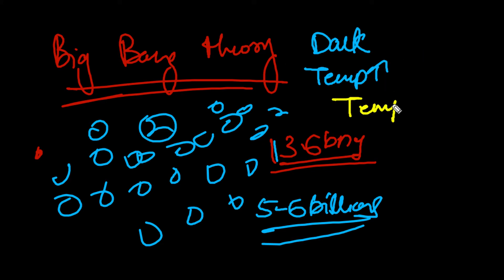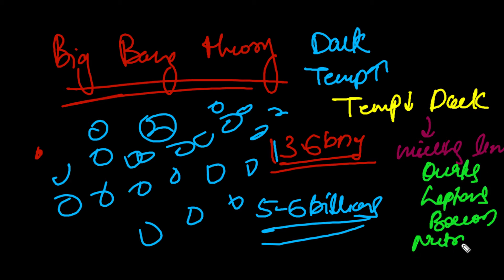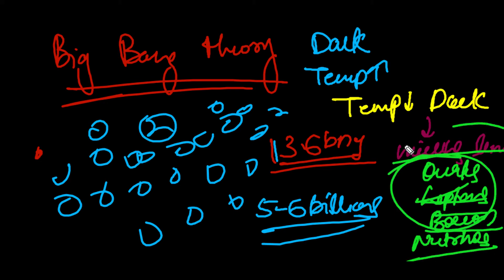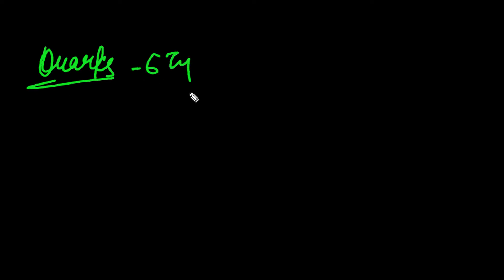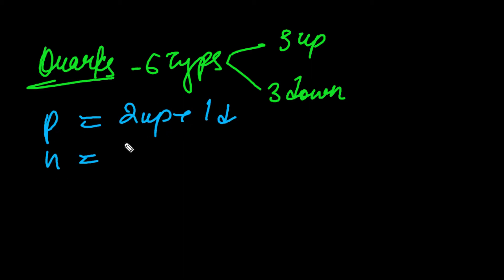Even after density and temperature decreased, there was still no light and no stars. There is a missing link in this period — something we don't know, involving quarks, leptons, neutrons, bosons, neutrinos. We don't know where these particles came from in this period. After this missing link, protons and neutrons and electrons formed. Quarks come in 6 types: 3 up quarks and 3 down quarks. To create a proton you need 2 up quarks plus 1 down quark, and for a neutron, 2 down quarks and 1 up quark.